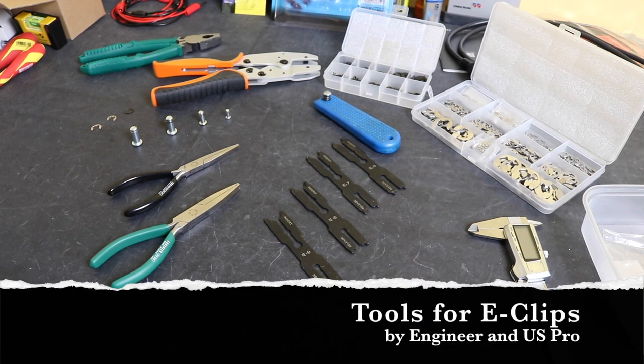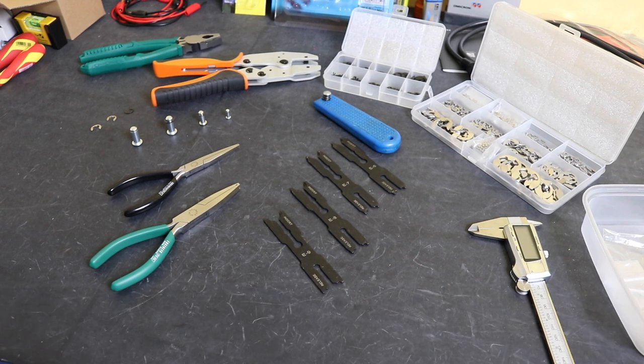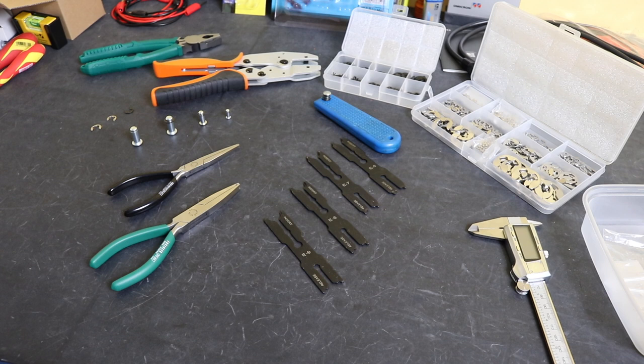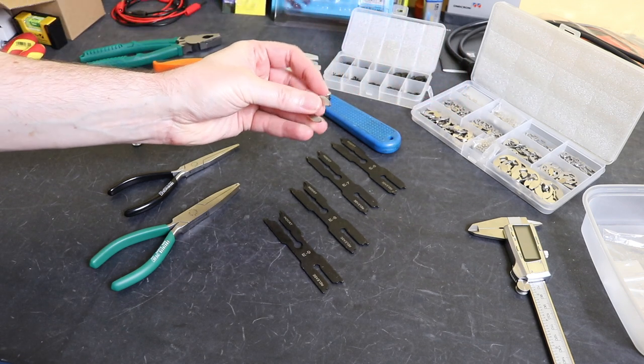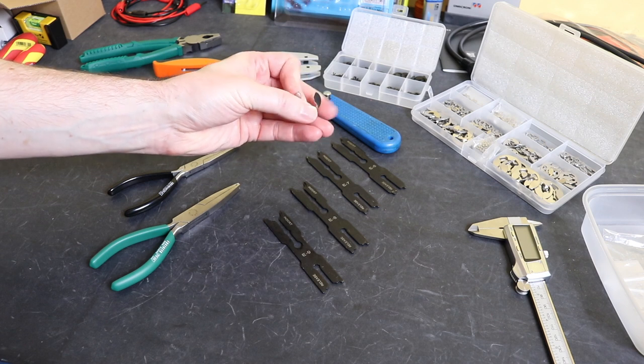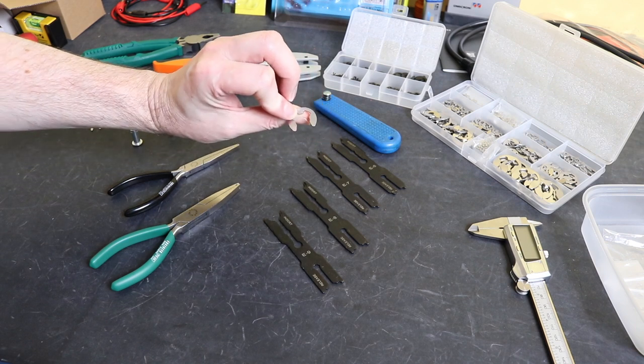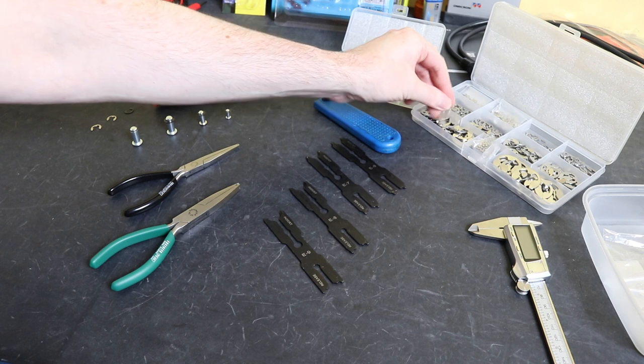Welcome back to the channel, hope everybody's doing well. In today's video we're going to look at some tools for working with E-clips. E-clips are these little fellows here that you find around clevis pins on tools and robotics and all kinds of bits and pieces really.